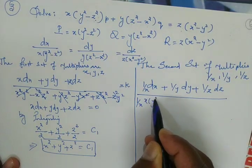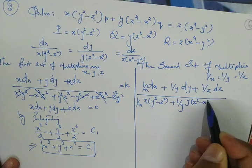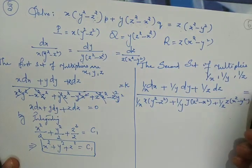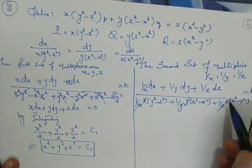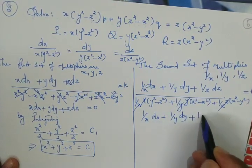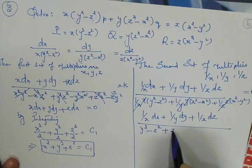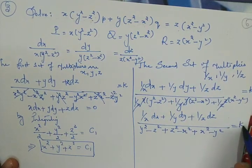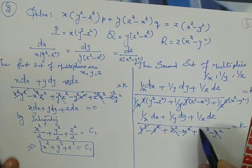The denominator becomes: (1/x)·x(y² - z²) + (1/y)·y(z² - x²) + (1/z)·z(x² - y²), which simplifies to y² - z² + z² - x² + x² - y². All terms cancel, making the total denominator zero.